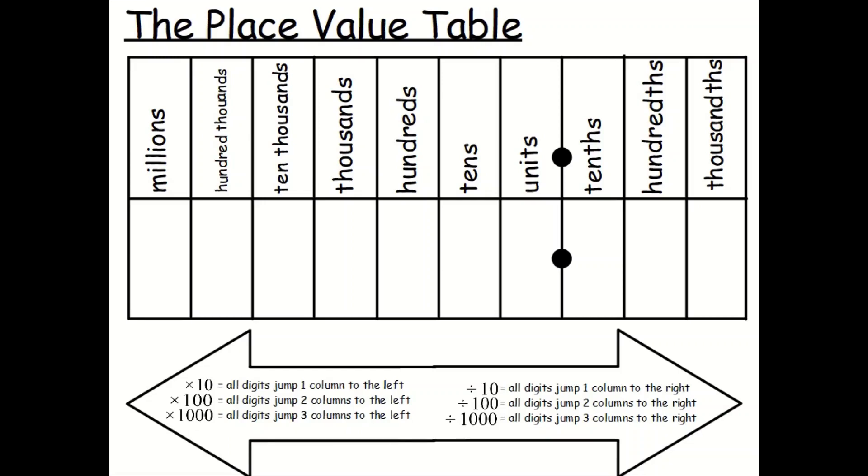Let's have a look at an example. What about 4,279 multiplied by 10? Well, let's get that number in the place value table. 4,279. Now, if we're multiplying by 10, all digits jump one column to the left. But what happens where that space has been created? We have to put a place value holder in there. So what's the number become now? It's become 42,790.